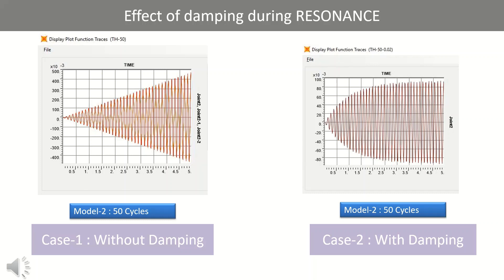Also we can observe that after certain time, the amplitude remains constant, that is it does not increase with respect to time. In this example we have considered damping as 2%. Let's see the impact of higher damping on amplitude during resonance.